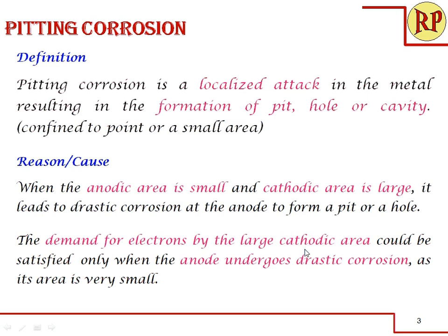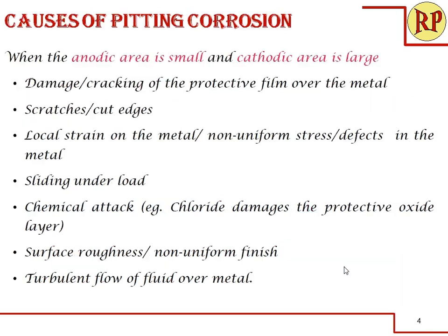At the cathode, reduction occurs by taking up electrons. When the cathodic area is very large, the demand for electrons is also too high, and this cannot be satisfied by the small anodic area. So the anode undergoes drastic corrosion in order to satisfy the large demand of the large cathodic area. This is why, when the anodic area is very small, drastic corrosion occurs and a pit is formed.